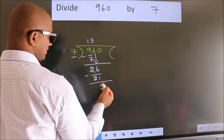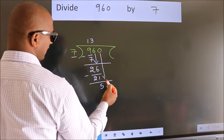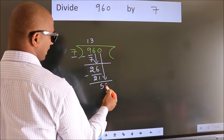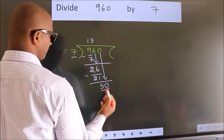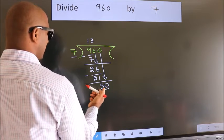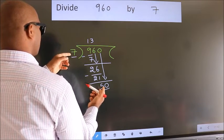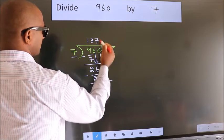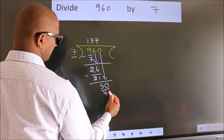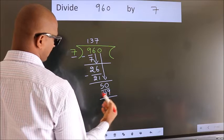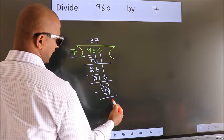After this, bring down the beside number. 0 down. So, 50. A number close to 50 in 7 table is 7 sevens, 49. Now, we subtract. We get 1.